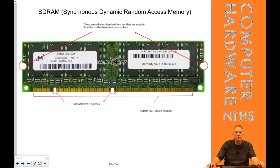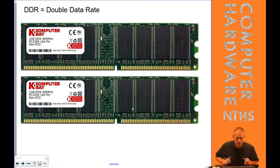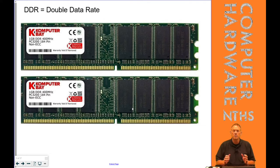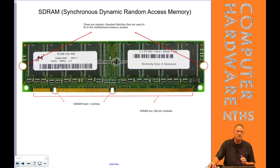This is what the original SDRAM chips look like, and they had two notches in them. The new versions of SDRAM, called DDR, only have one. DDR originally stood for double data rate — and still does — because the first stick of DDR was double the speed of the last stick of SDRAM that was made.